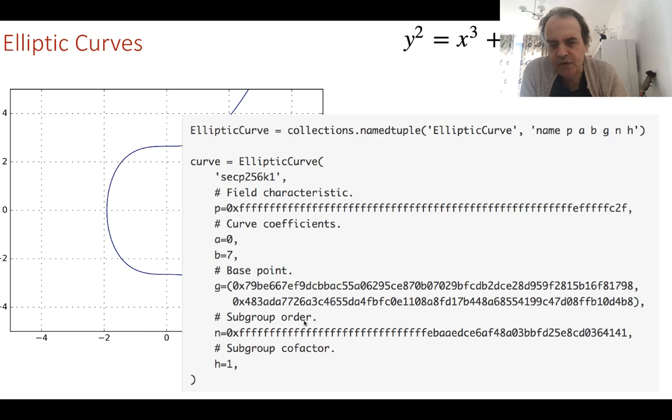Then we have the subgroup order value, n. I'll represent it as large n here, but we can see here this is one of the factors of the curve.